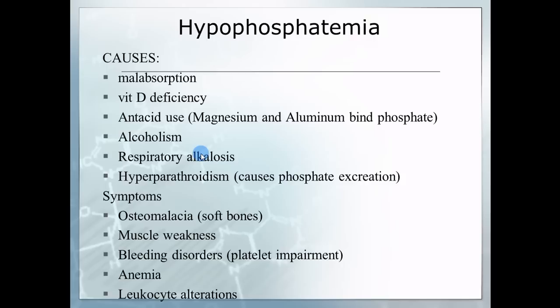Hypophosphatemia: look back at hypercalcemia — not absorbing enough, vitamin D issues since vitamin D helps bring in phosphate. Antacid use can cause hypophosphatemia because the chemicals in antacids bind to phosphate and prevent absorption. Antacids are high in magnesium, so if the cause is antacid use, you'd expect magnesium to go up while phosphate goes down. Symptoms of hypophosphatemia include weaker bones, muscle weakness, and since phosphate is important for building DNA in red blood cells, you might see bleeding issues and anemia.